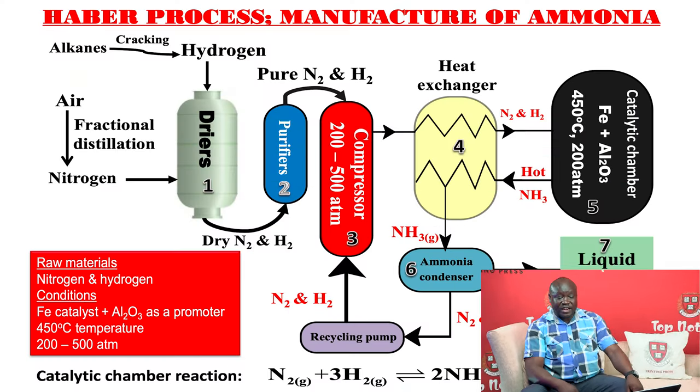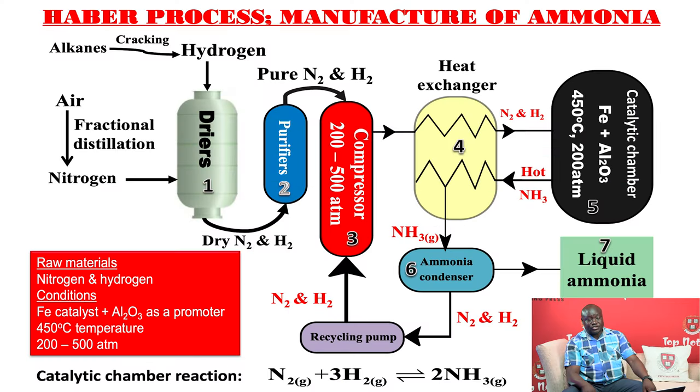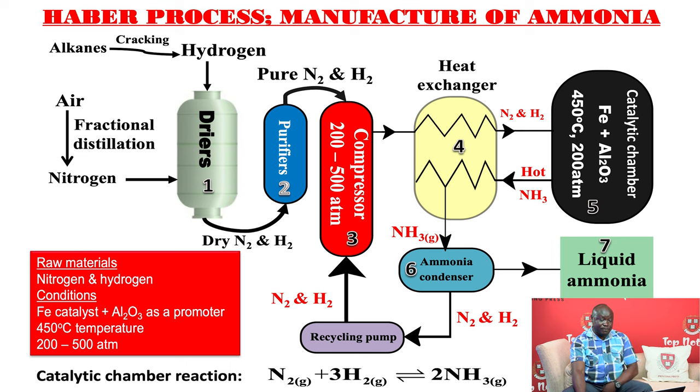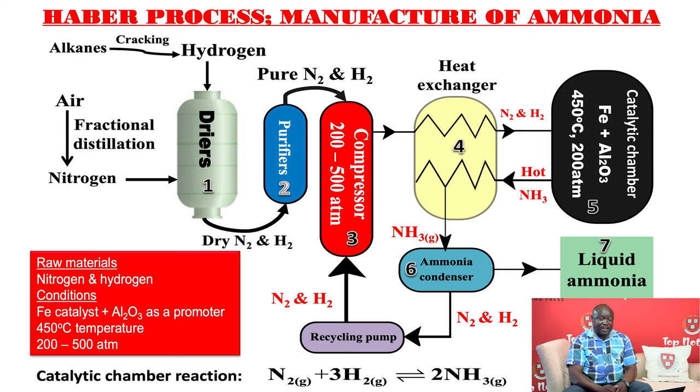The role of a catalyst is to speed up the rate of reaction. The forward reaction is exothermic, so it is favored by low temperature. If we use too low a temperature, the reaction will be too slow. If we use very high temperature, ammonia will decompose to produce nitrogen and hydrogen. That is why we select optimum conditions: iron as catalyst, temperature of 450 degrees Celsius, and pressure between 200 to 500 atmospheres. That is the Haber process.